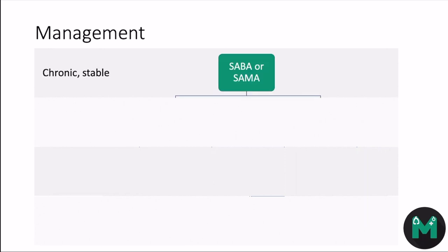Management of a COPD patient relies heavily on their symptoms. If they're chronic but stable, you can start them on a SABA (short-acting beta-2 agonist) such as salbutamol, or a SAMA such as ipratropium.